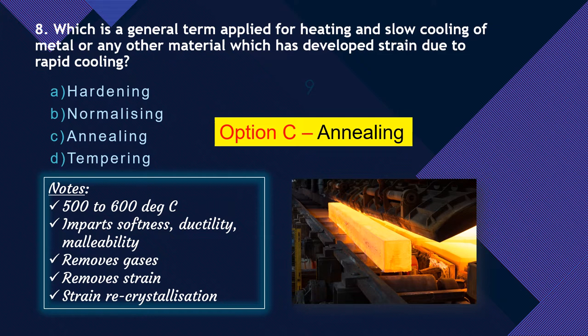Tempering involves reheating hardened plain carbon steel at a temperature below the critical temperature, giving the steel a stable condition. Tempering temperature varies from 100 to 700°C. The higher the tempering temperature, the softer the resulting steel.